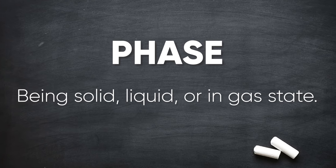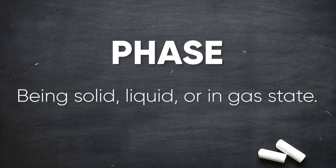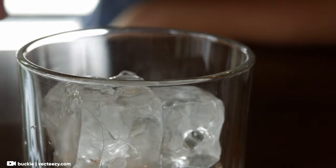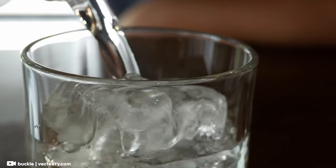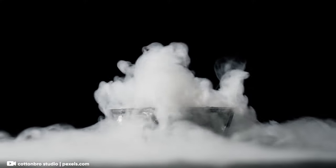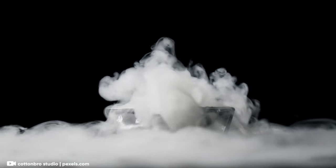And finally, phase of matter. It describes the physical form of a material as solid, liquid, or gas. Ice, for example, is solid, water is liquid, and steam is a gas. Each phase has its own unique physical properties.